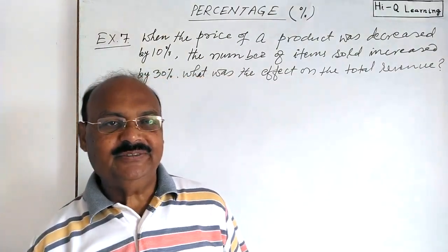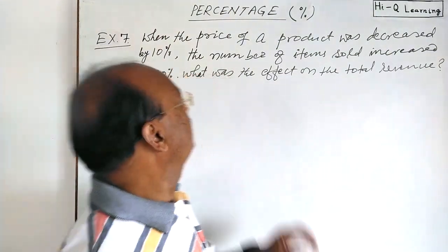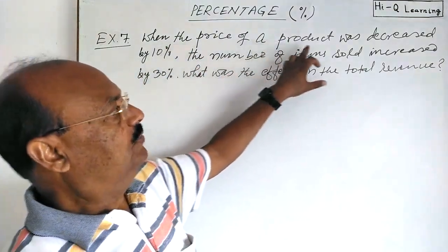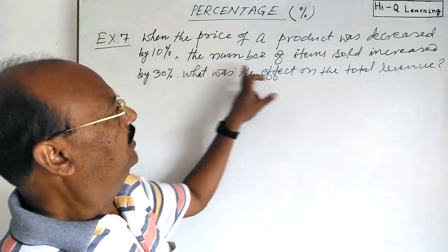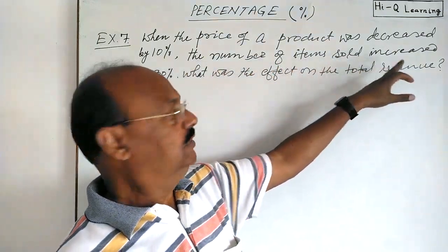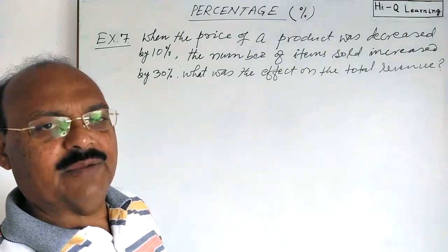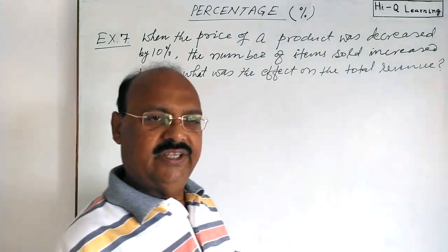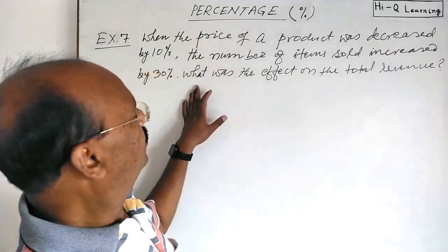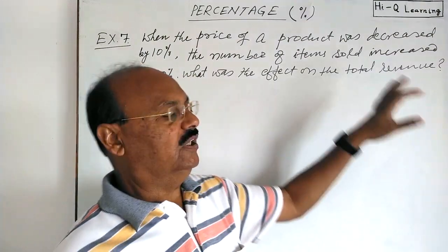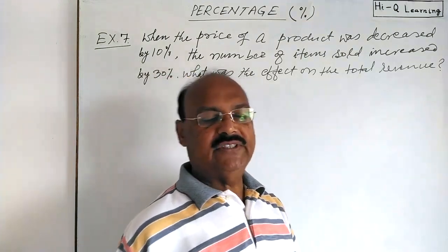Let us discuss a very important question from the topic percentage. The question is: when the price of a product was decreased by 10 percent, the number of items sold increased by 30 percent. Naturally, if price decreases, sale increases. So what was the effect on the total revenue?